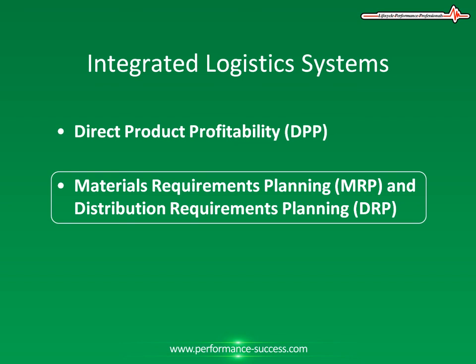Distribution Requirements Planning is the application of MRP2 techniques to the management of inventory and material flow, effective warehousing and transportation support. DRP systems operate by breaking down the flow of material from the source of supply through the distribution network of depots and transportation modes. This is undertaken on a time-phase basis to ensure that the required goods flow through the system and are available as and when required at the right place at the right time — one of the classic distribution definitions.